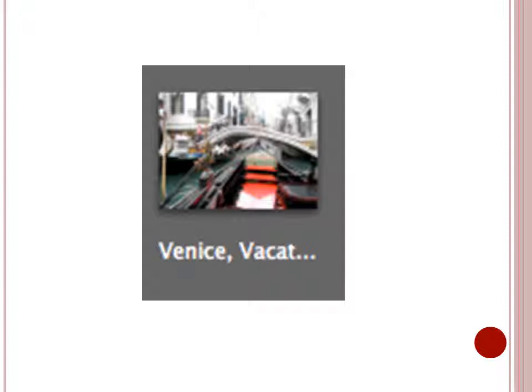In iPhoto, you can use keywords similar to tagging in other programs. In the above photo, I have tagged it with the keywords Venice, Vacation, and Grand Canal. Using the keywords, I can then sort by keywords to bring up pictures with those specific keywords. iPhoto also has the ability to rate photos with stars. This one wouldn't be rated very high because it's very pixelated. There are many other functions too numerous to mention in this training.